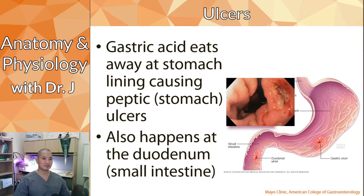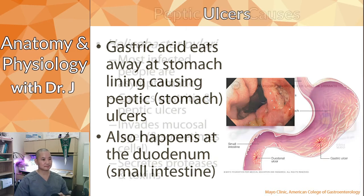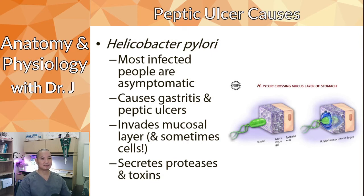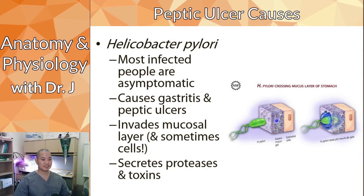Ulcers can also happen at the duodenum — the first part of the small intestine — which receives the very acidic mixture of digested food and gastric acid. Peptic ulcers can be caused by gastric acid, but also by the bacterium Helicobacter pylori. Most infected people are asymptomatic. H. pylori causes ulcers by burrowing through the mucus and mucin gel to attack the stomach lining.